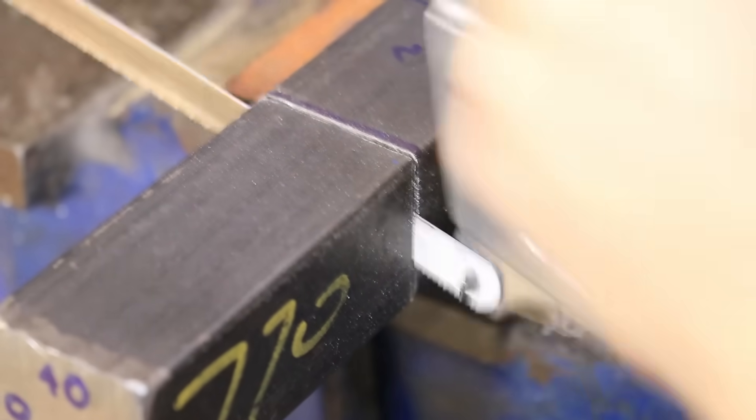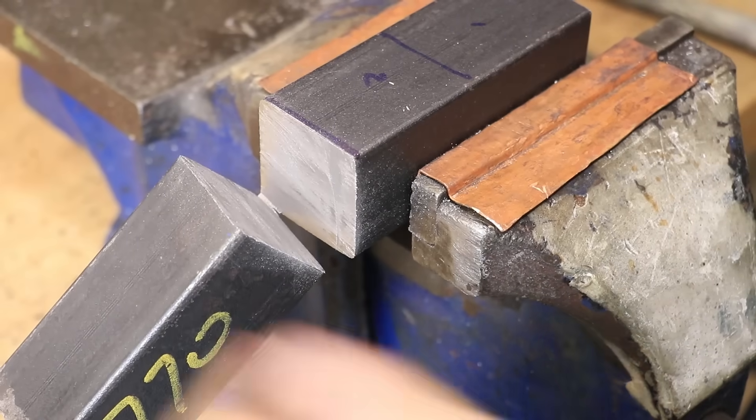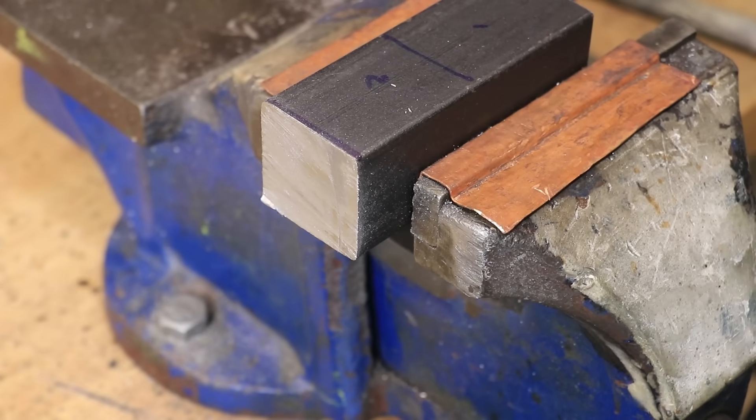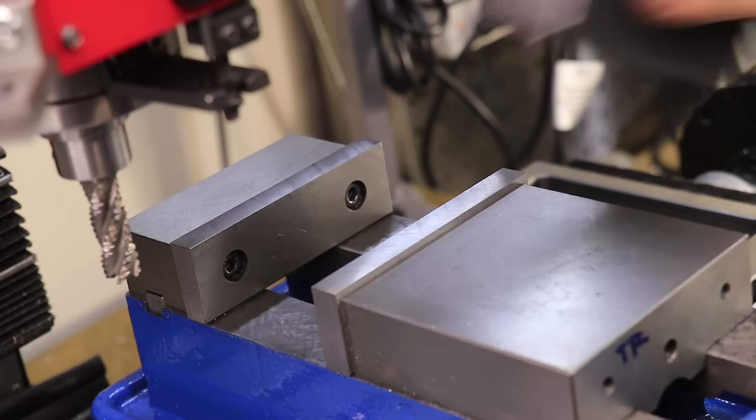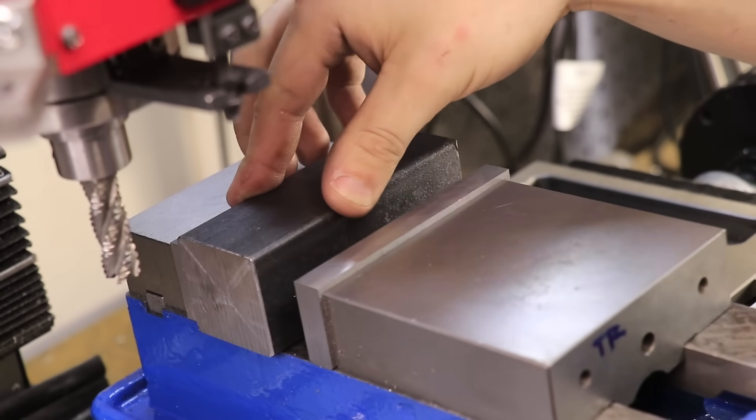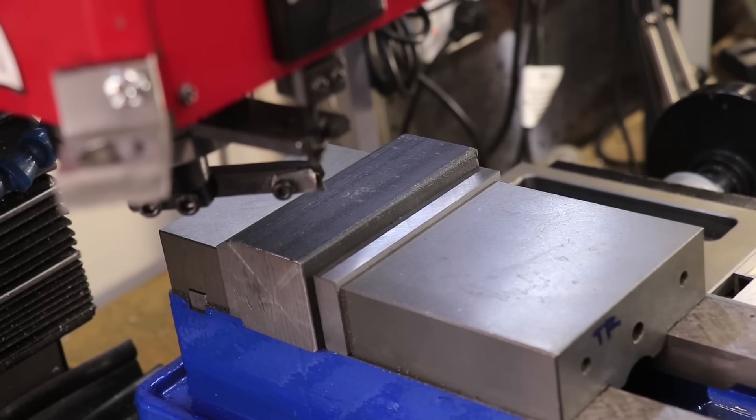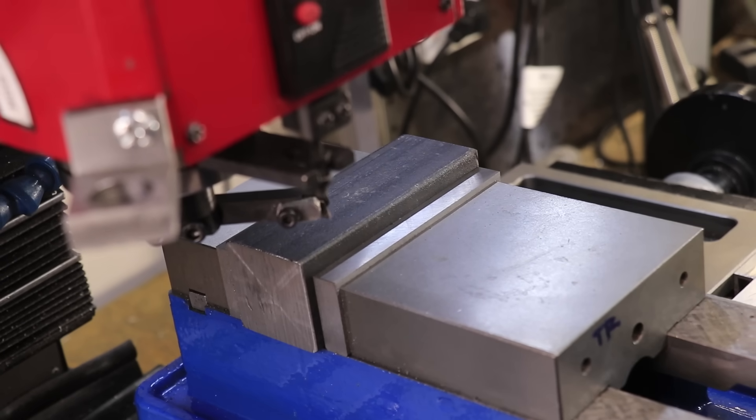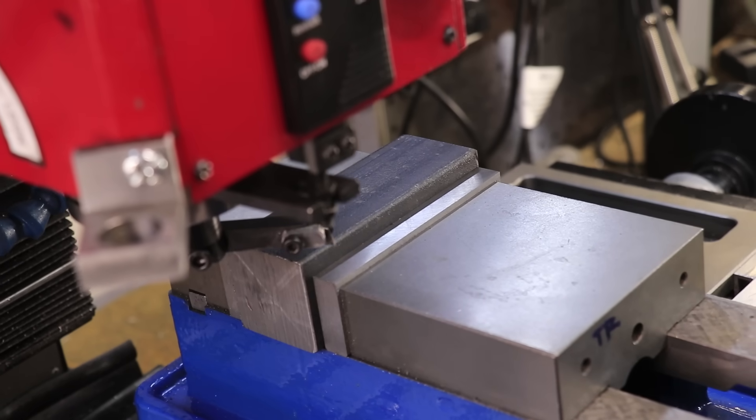And what I'll do is I'll machine one and then I'll cut it in half once most of the machining is done. Doing it this way will make machining it a lot quicker and it should help ensure that both parts are identical at least before I heat treat them.